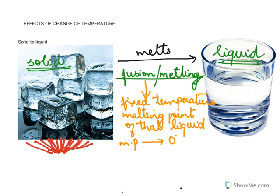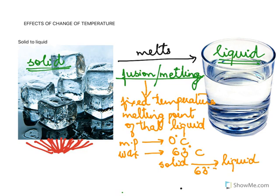The melting point of water — I'll just write MP — the melting point is zero degrees Celsius. However, in the case of wax, wax melts at 63 degrees Celsius, meaning solid wax changes to liquid wax at 63 degrees Celsius. So fusion is the changing of any solid to liquid.